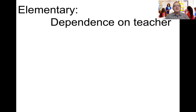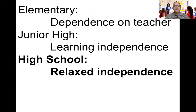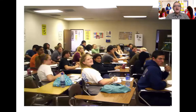Elementary school had dependence on the teacher. Junior high is learning independence. High school is relaxed independence — this is very important. The students are not nervous now about being independent; they're used to doing things by themselves. Here's an example of a high school class — they're smiling and relaxed.